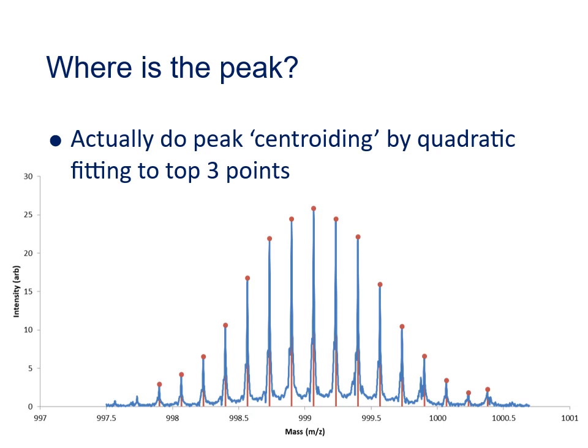So as a quick recap, in a profile mode mass spectrum you can see the noise and the complete shape of all the peaks in the spectrum. Whereas in the centroided spectrum you can just see the peaks as sticks, with no noise in between them. And in order to generate the centroided spectrum, at some point a peak threshold must have been set, and any peaks below that will be missing from the centroided spectrum.